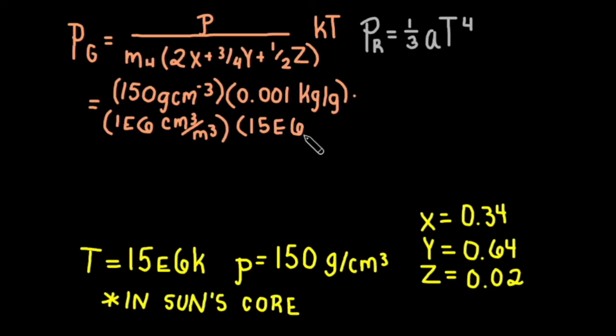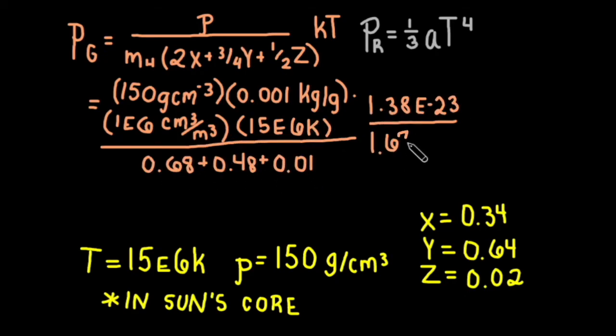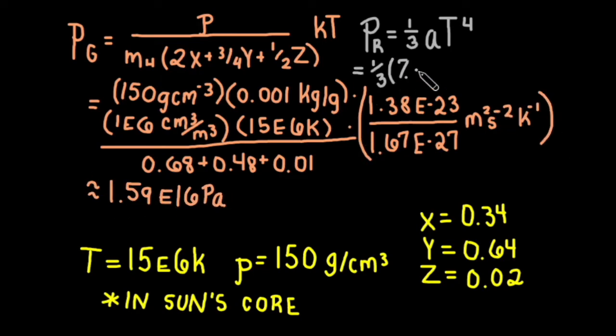If we plug in all these values, we can find the gas pressure is then 1.59 e to the sixteenth pascals, and the radiation pressure is about 1.28 e to the thirteenth pascals.